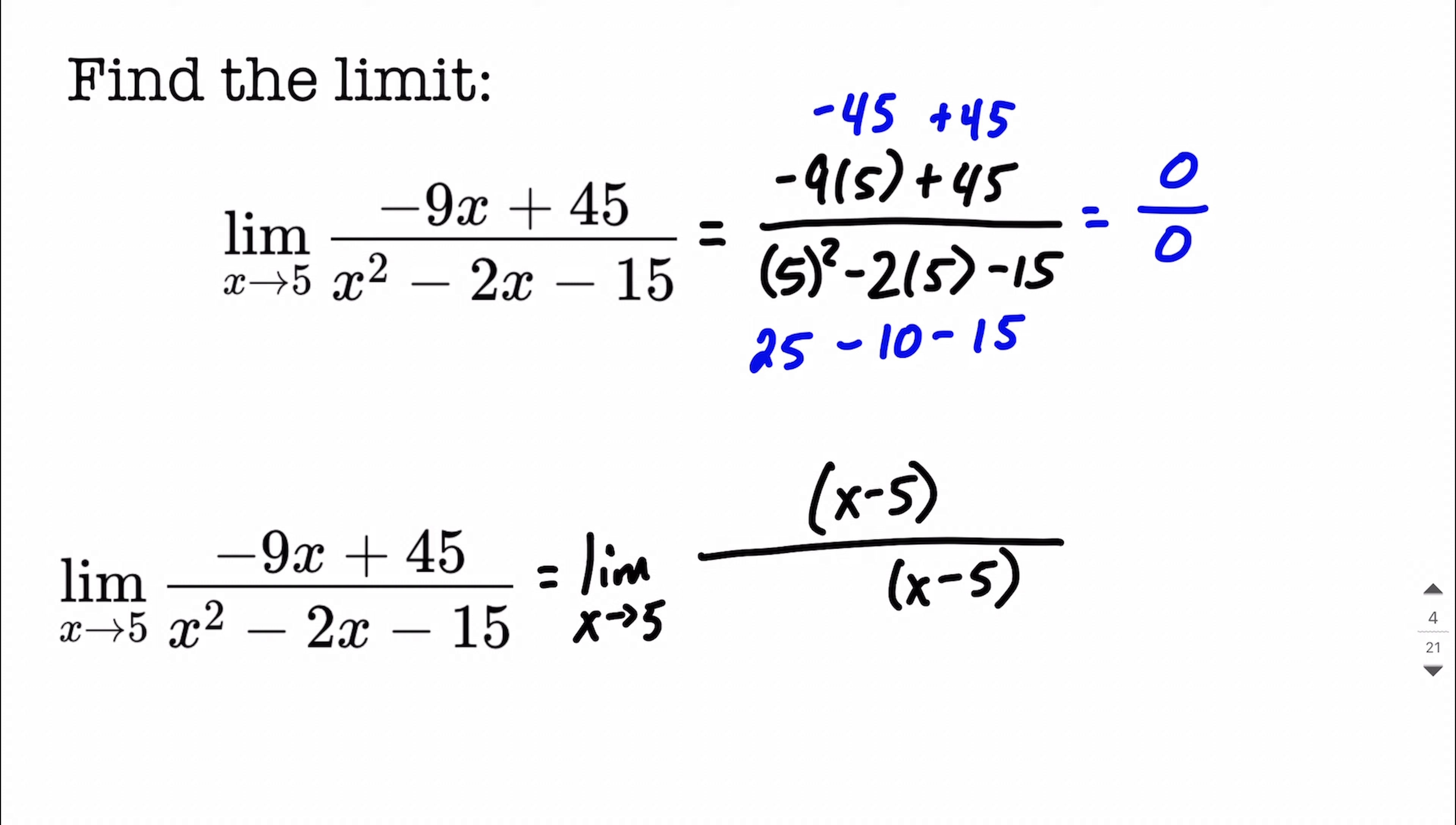So as we think about factoring our numerator, we can simply write down that factor, the x minus 5, and kind of work backwards. Thinking to ourselves, x multiplied by what is going to make negative 9x? In that case, we're going to get a negative 9.